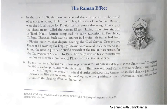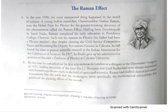In the year 1930, the most unexpected thing happened in the world of science. A young Indian researcher, Chandrasekhar Venkat Raman, won the Nobel Prize for Physics for his groundbreaking discovery of the phenomenon called the Raman Effect. Hailing from Trichinopoly in Tamil Nadu, Raman completed his early education in Presidency College, Chennai. His father had been a physics teacher. Despite clearing the civil service competitive exam and becoming the deputy accountant general in Calcutta, he still found time to pursue scientific research at the Indian Association for the Cultivation of Sciences. In 1917, he finally gave up his administrative position to become a professor of physics at Calcutta University.